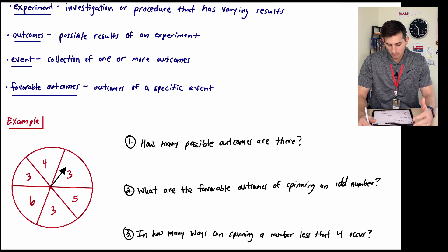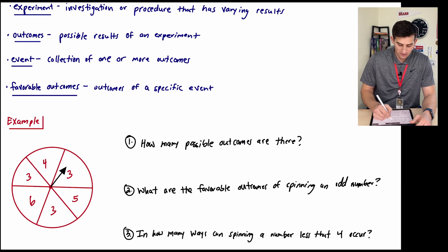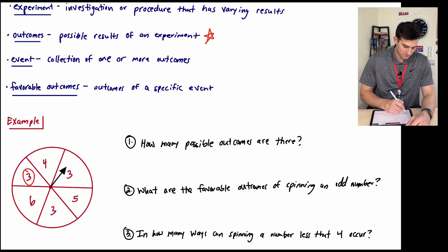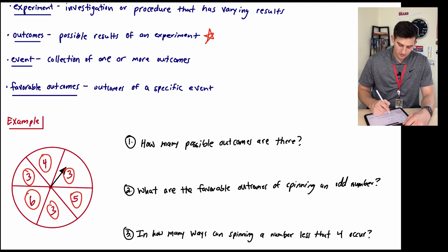So question number one says, how many possible outcomes are there? So if we look back at our definition of an outcome, it says possible results of an experiment. So we could land on this 3, this 4, this 3, this 5, this 3, or this 6. So we have six possible outcomes.